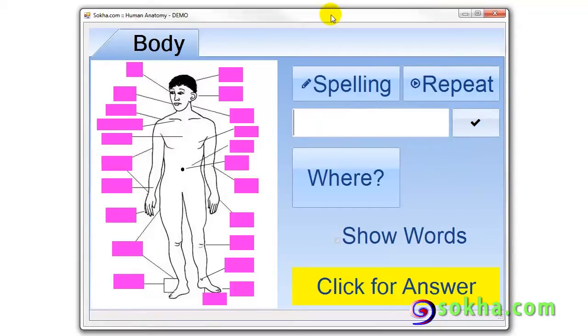Spell knee. Okay. I didn't get that. Let's try repeat. Knee. I still didn't get it. So you want to see the answer. Come down here. Click on this yellow area. And it will give you the answer to that particular word. And that's the spelling.